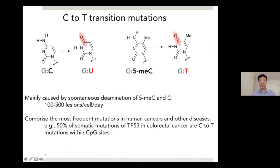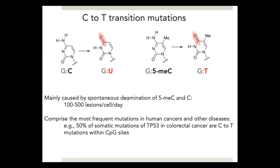C-to-T transition mutation represents the most frequent mutation found in human cancer and other diseases. For example, about 50% of somatic mutations of tumor suppressor protein p53 in colon cancers are C-to-T mutations within CpG sites. C-to-T transition mutations are mainly caused by spontaneous deamination of cytosine and 5-methylcytosine, which occur about 100 or 500 events per cell per day.